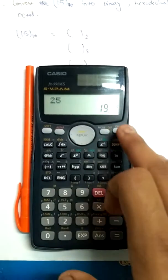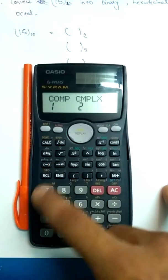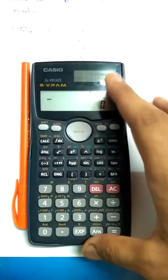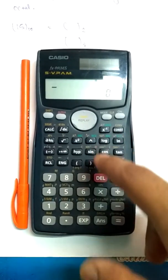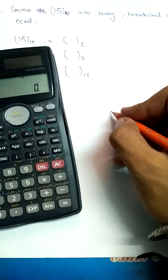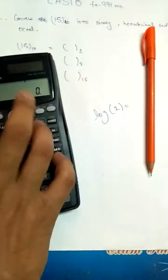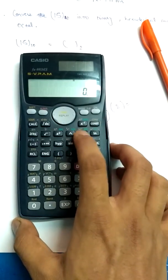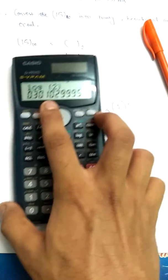In today's tutorial I also want to show you how to find the log. Let's come back to normal mode. My calculator is now in normal mode. I'll show you how to find the log — let's choose a random number. Let's find log of 2: type log, bracket, 2, and press equals.